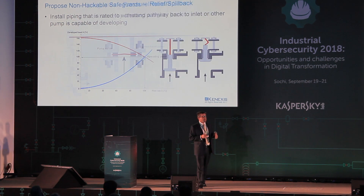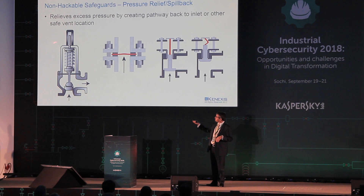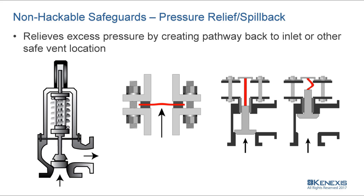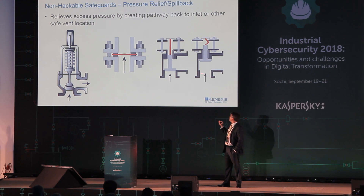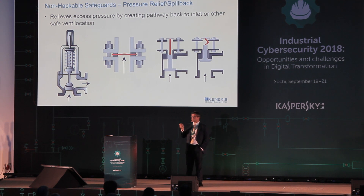What if I don't want to do that? There are other non-hackable safeguards. For pressure relief, you can use a spring-based pressure relief valve: as the pressure of the material gets higher, it pushes on the plug, overcomes the spring force, and allows material to escape to a storage tank. Other similar options include a rupture disc — a sacrificial membrane that pops open when pressure goes high — and a buckling pin device that works similarly to the relief valve, except instead of a spring, a pin bends and breaks when the pressure gets too high. None of these things can be hacked.